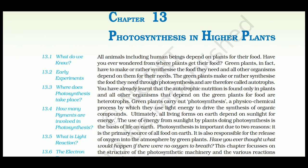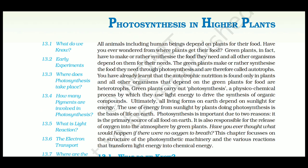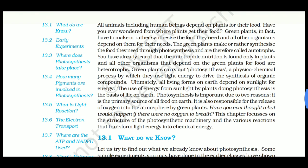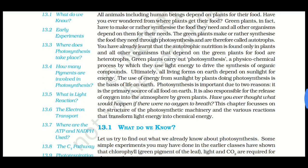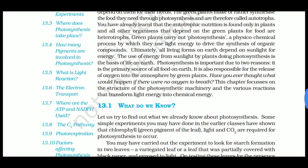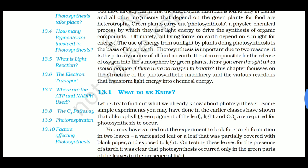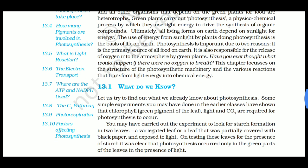All animals including human beings depend on plants for their food. Have you ever wondered where the plants get their food? Green plants have to make or synthesize the food they need, and all other organisms depend on them. So the green plants make food through photosynthesis and therefore are called autotrophs — meaning they create their own food. All other organisms that depend on green plants for food are heterotrophs, and green plants carry out photosynthesis.